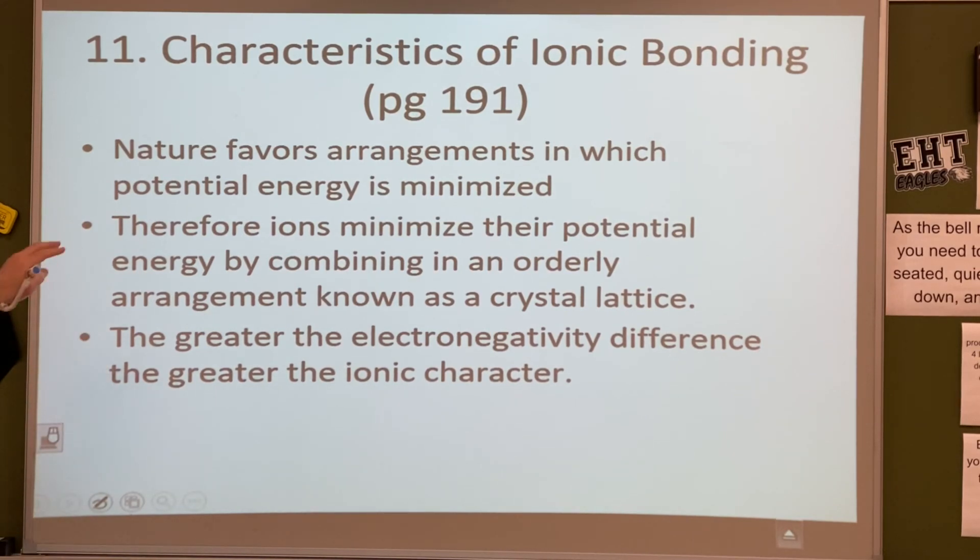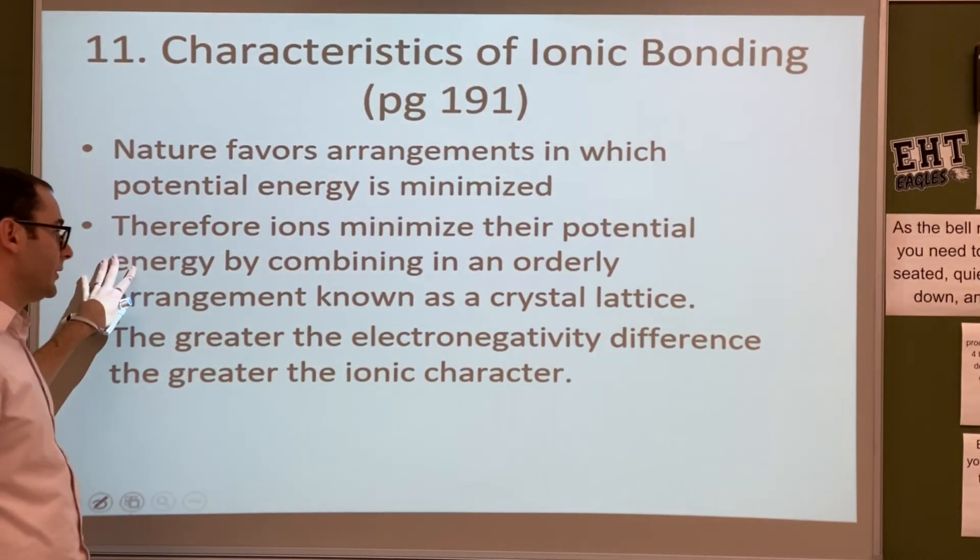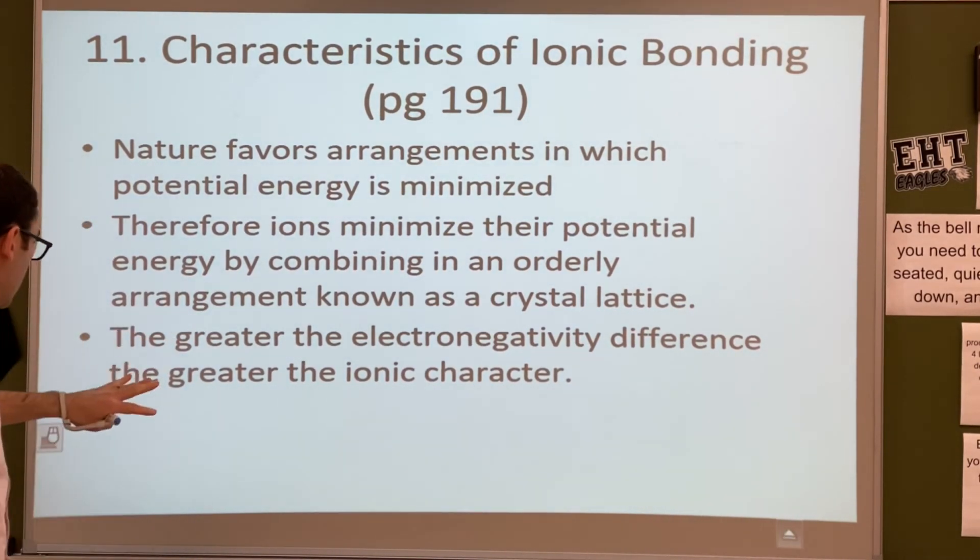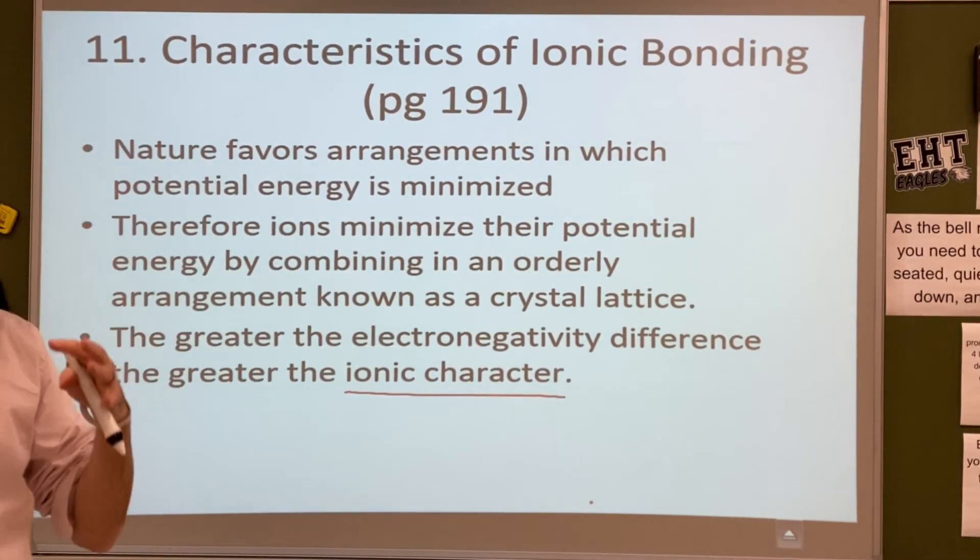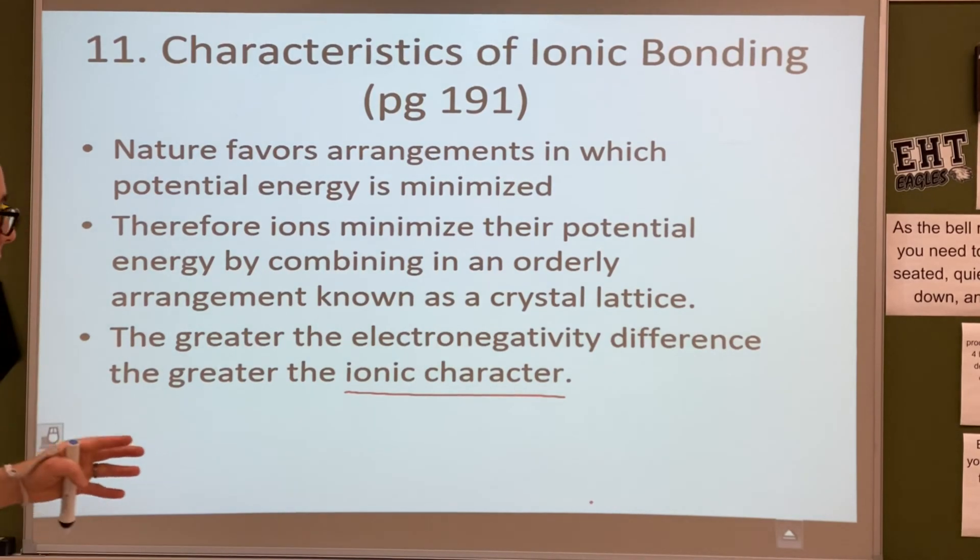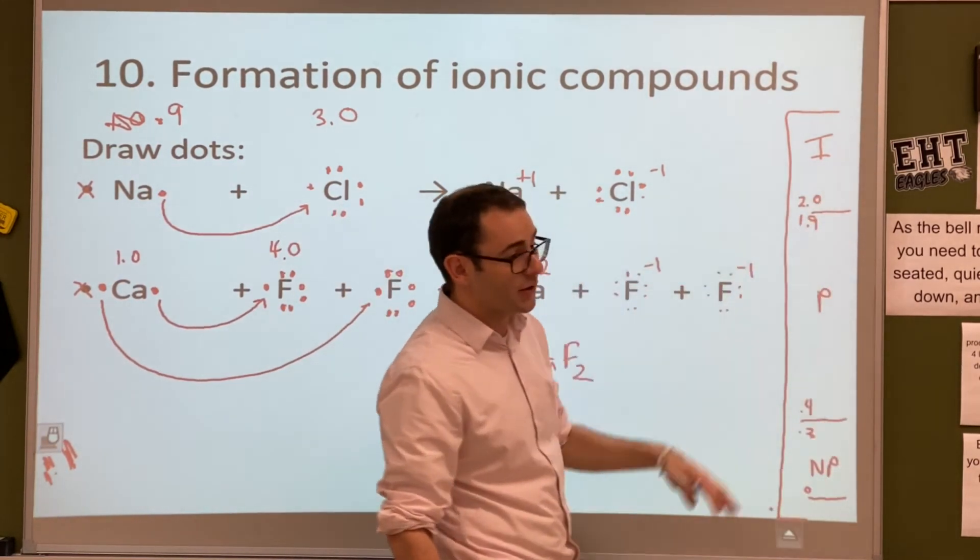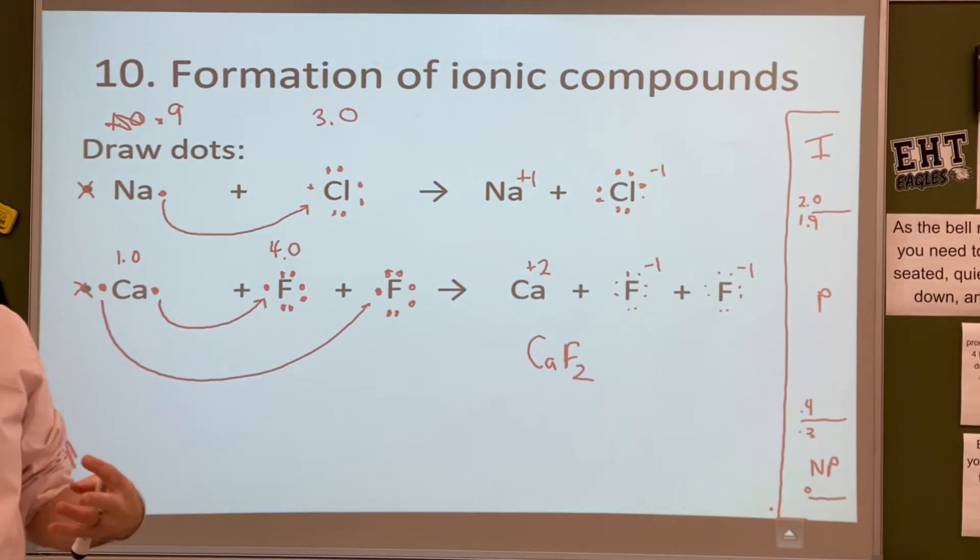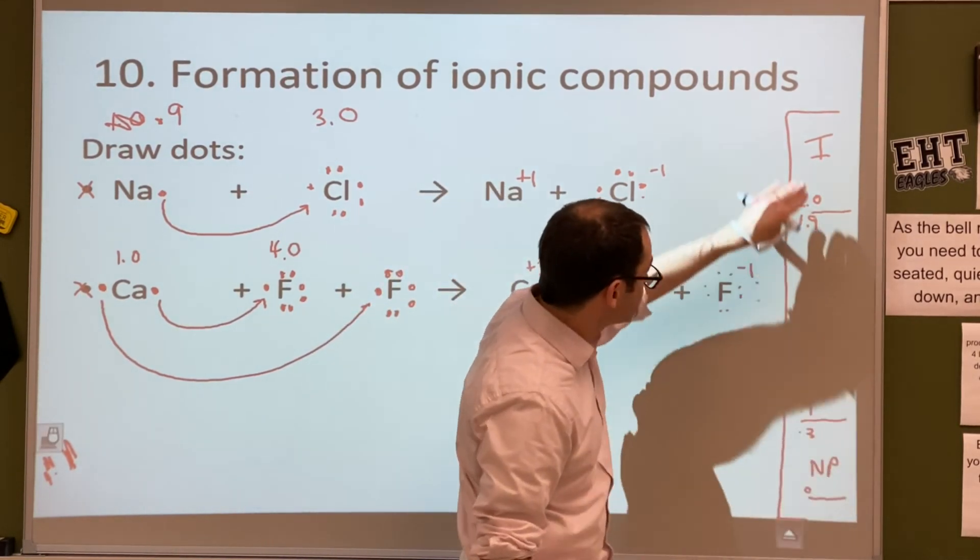Alright, so what are some characteristics of ionic bonding? Nature favors arrangements in which the potential energy is minimized, and we've seen this even with covalent bonds. Therefore, ions minimize their potential energy by combining an orderly arrangement known as a crystal lattice. The greater the electronegativity difference, the greater the ionic character. Okay. Ionic character is, you can basically think of it as how ionic is a molecule.